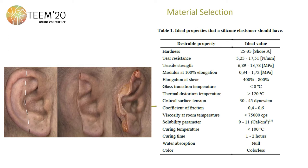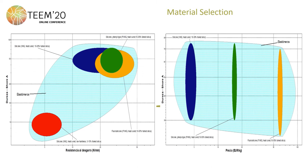After extensive research, it was concluded that the appropriate material is silicone elastomer. The table shows the values of the ideal properties that the prosthesis should have. Taking this into account, a study was carried out where it was found that, of the silicone elastomers, four materials were within the proposed range. Among these, the selected material was chosen because it meets all the characteristics and also has the lower price.